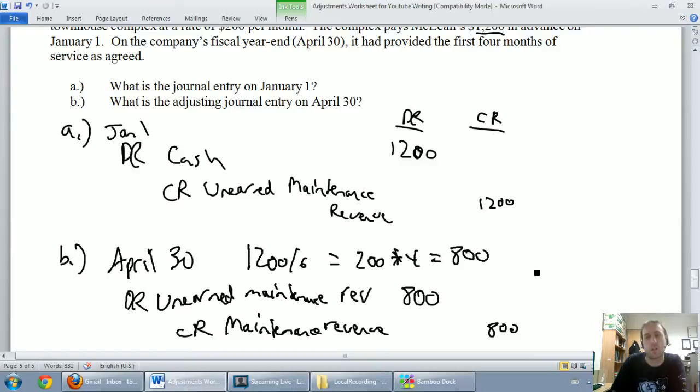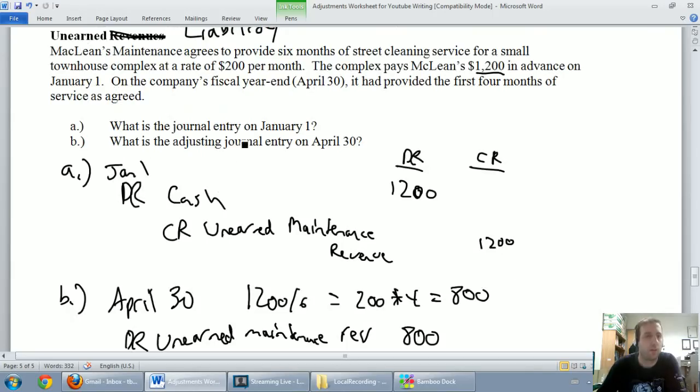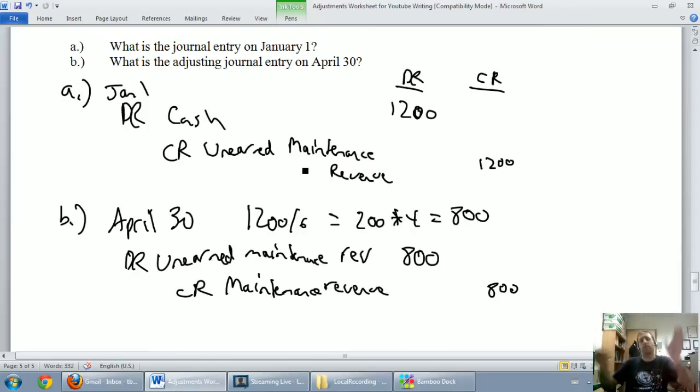This is our adjusting journal entry. And again, the reason is, the townhouse complex that hired us, they have no idea this is happening behind the scenes. They're not saying, oh, these guys have earned $800 now, we better invoice them on April 30th. No, they're just thinking, okay, well, our contract ends in a couple months, maybe we'll renew them or not, but they've done four months' worth of work. Again, we've done four months' worth of work. We've earned four months' worth of revenue. We need to say it's not unearned anymore. It's been earned. Debit unearned maintenance revenue. Credit maintenance revenue. We've got a good adjusting journal entry.